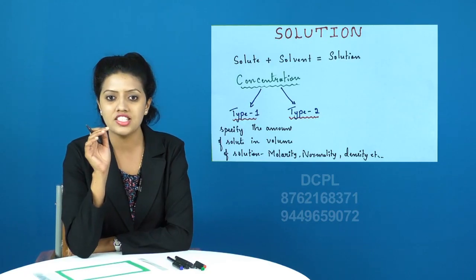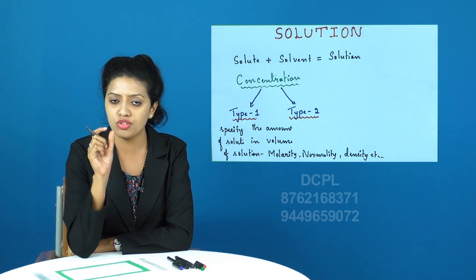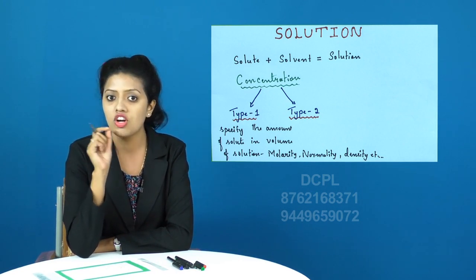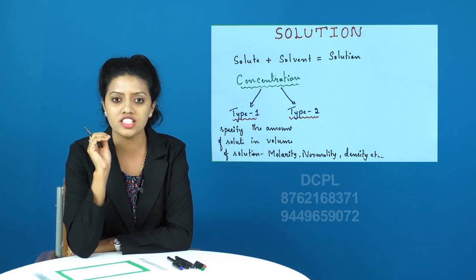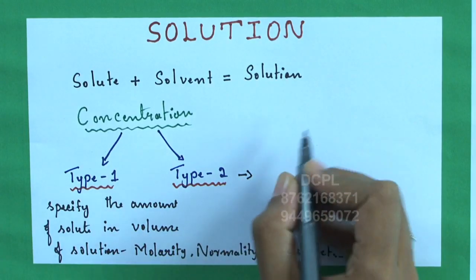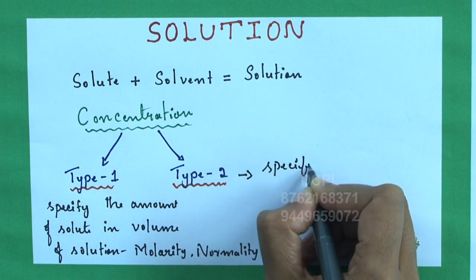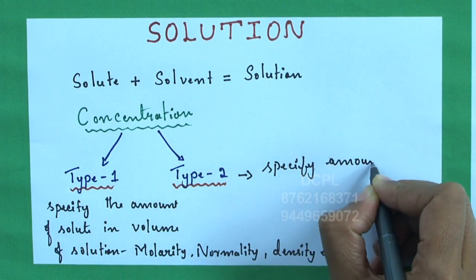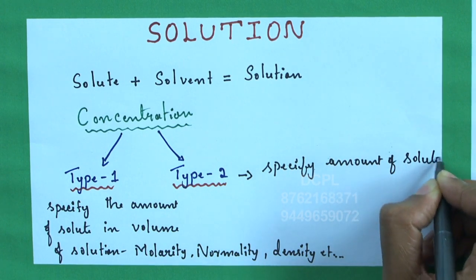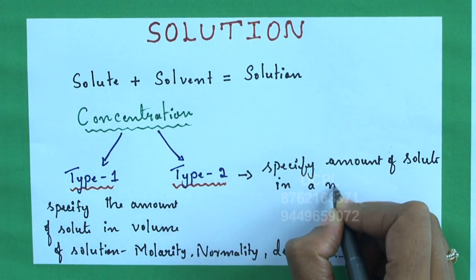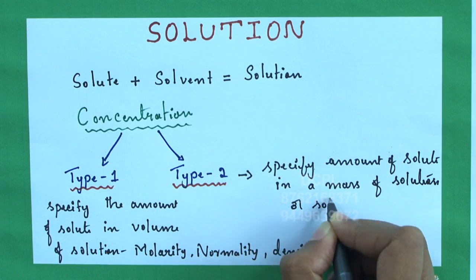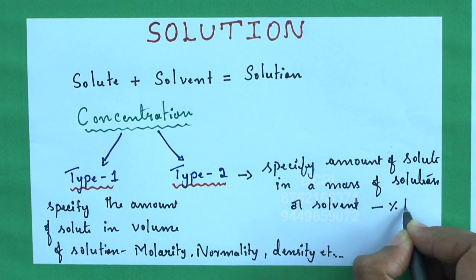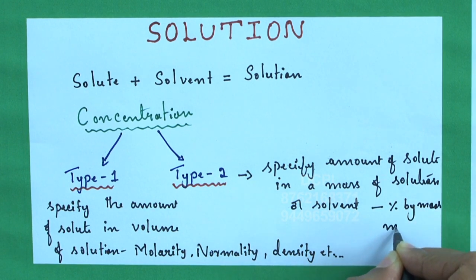Whereas type 2 units specify the amount of solute present in a given mass of solution or solvent, such as mass percentage, molality, and mole fraction. Type 2 units specify amount of solute in a mass of solution or solvent: percentage by mass, molality, and mole fraction.